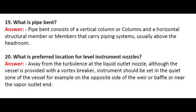Question 20: What is the preferred location for level instrument nozzles? Answer: Away from the turbulence at the liquid outlet nozzle, although the vessel is provided with a vortex breaker. The instrument should be set in the quiet zone of the vessel — for example, on the opposite side of the weir or baffle, or near the vapor outlet end.